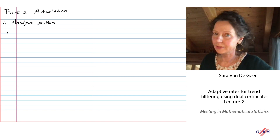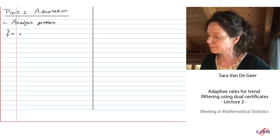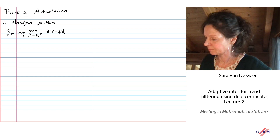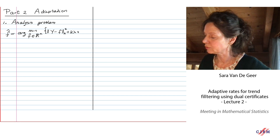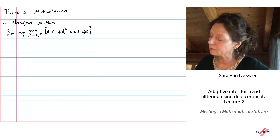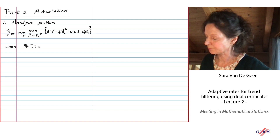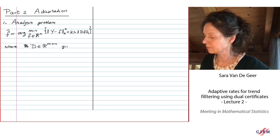The estimator is going to be the minimizer of least squares loss. In n-dimensional space, you have a vector of observations y, and you want to estimate its mean. There is a penalty of the form D of f, which is the L1 norm of certain linear combinations of the function f — or vector f — where D is a given matrix called an analysis matrix.